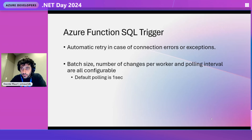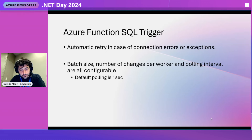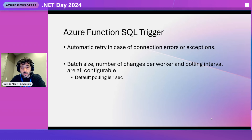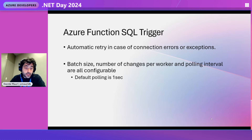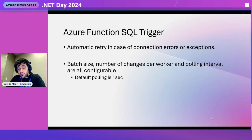A couple of other things: one of the most common questions I get is, what happens if the connection to the database is lost? Inside the Azure Functions SQL Trigger code there is already all the logic to retry in case of connection errors or exceptions. Of course, at some point we give up if an exception is continuously happening. But for temporary disconnections, the Azure Functions SQL Trigger will take care of that for you. You can also configure the batch size, number of changes per worker, and the polling interval — by default it checks for changes every one second, but you can change that value.